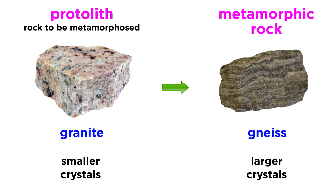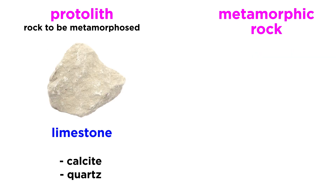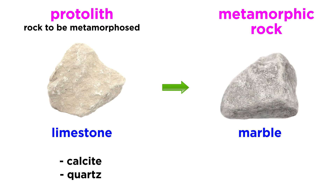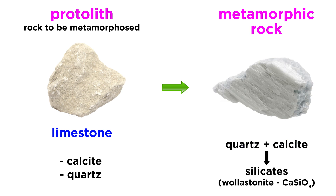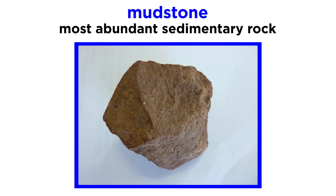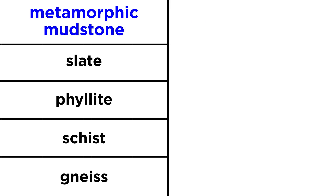High-grade metamorphism of a granite will transform it into a gneiss. The metamorphism of limestone, which typically contains mainly calcite with some quartz, involves a lot of calcite recrystallization forming the metamorphic rock marble. Other minerals like quartz will react with calcite to form silicate minerals such as wollastonite, or CaSiO3. One of the most common types of rock that get metamorphosed in mountain-building events are mudstones, as these are the most abundant sedimentary rock. They show the most dramatic transformations, going from slate to phyllite to schist, and finally gneiss.